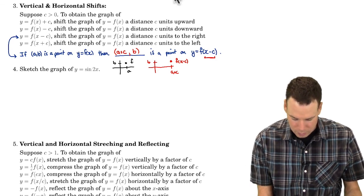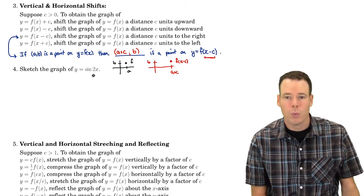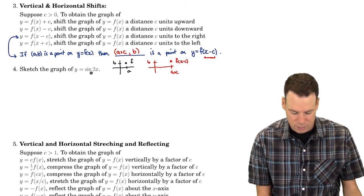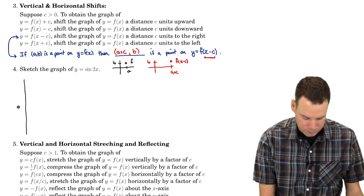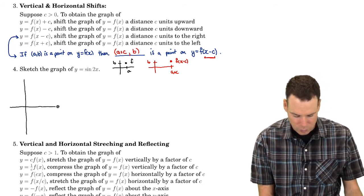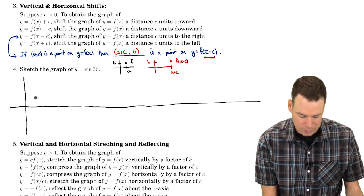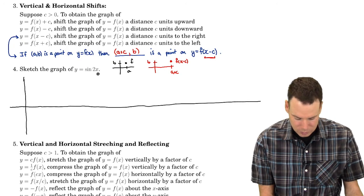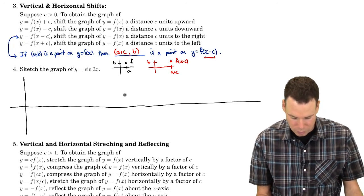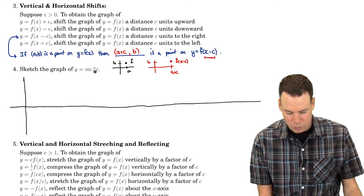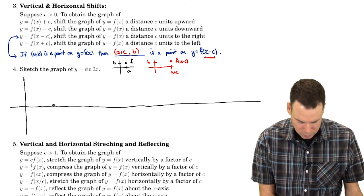Let's look at this next example: y equals sine of 2x. Let's sketch its graph. We're not in vertical or horizontal shifts anymore — we're into the stretching and compressing part. Let's see if we can sketch this before we summarize vertical and horizontal stretching and compressing. I'll start with sine of x because I know what that sketch looks like.